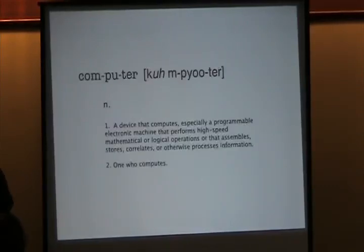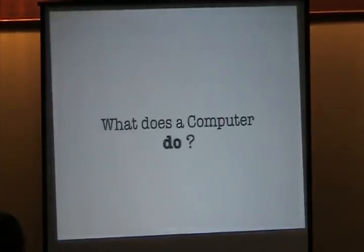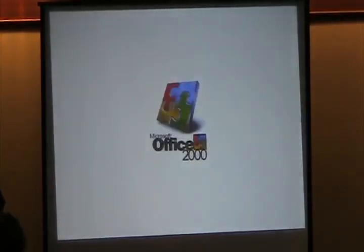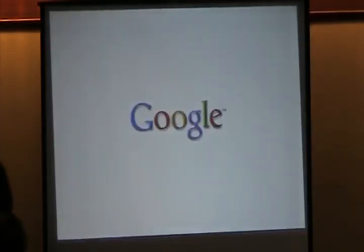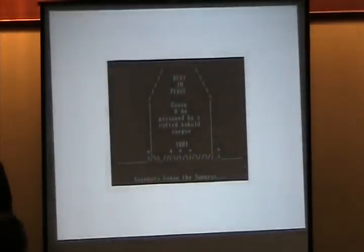What is a computer? A computer is a device that computes — especially a programmable electronic machine that performs high-speed mathematical or logical operations, or that assembles, stores, correlates, or otherwise processes information. This is a computer. This is a small computer. This is a big computer. This is a big, fake computer. And this is a really old computer. But what does a computer really do? It helps us write documents — for example, Linux man pages. We can compose shopping lists. Computers can even delete documents on the fly. We can write emails, surf the web, watch movies, listen to our favorite music, and even play games.